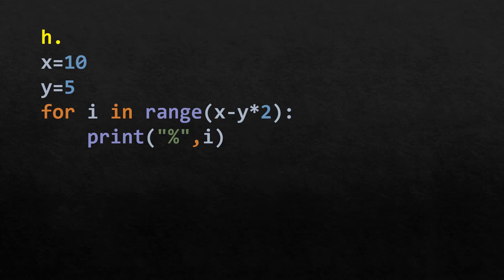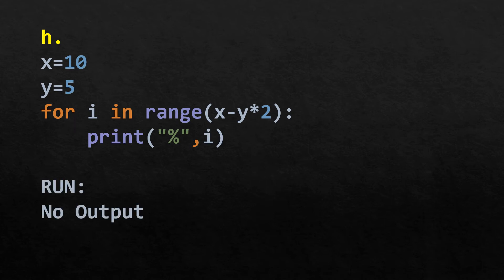Here x is 10 and y is 5. The range is range(x - y * 2), which is range(10 - 10), which is range(0). Since there are no values in range(0), the loop does not execute and there is no output.